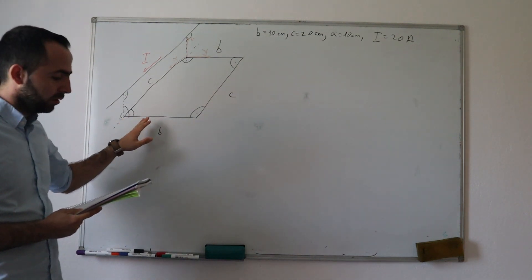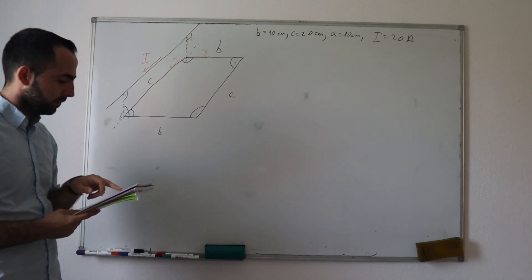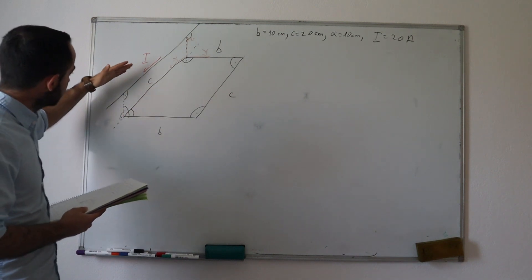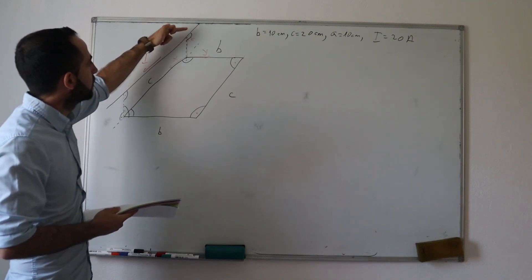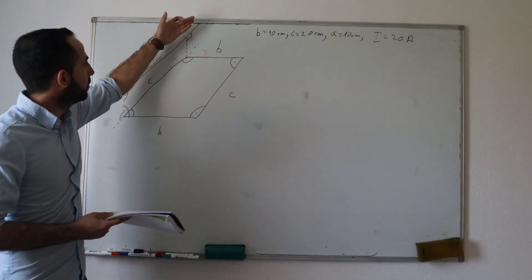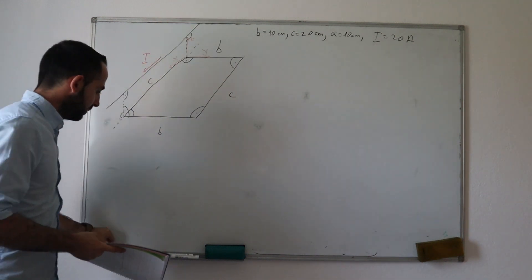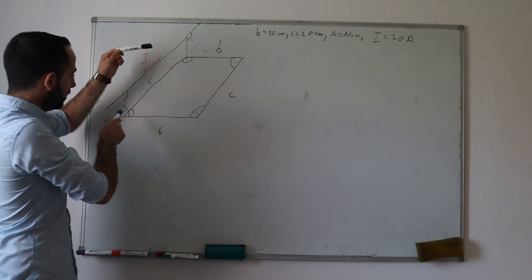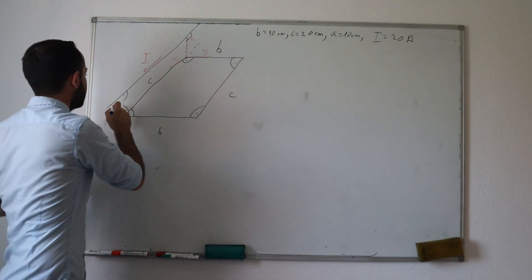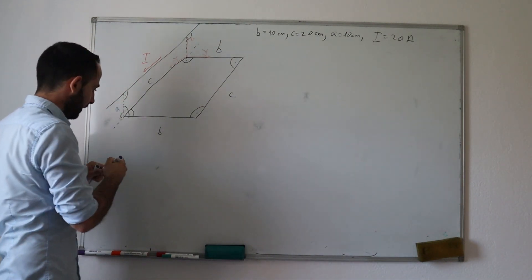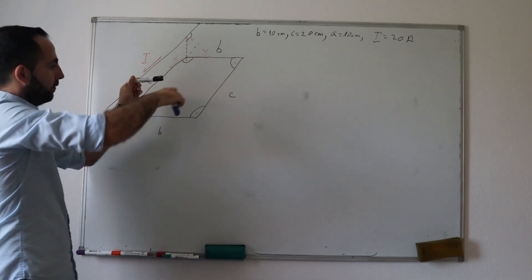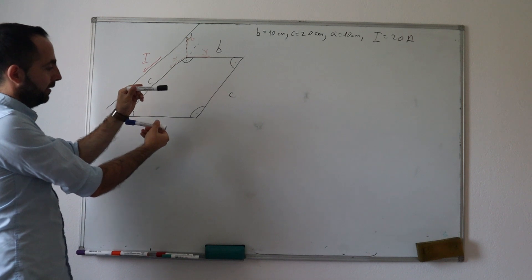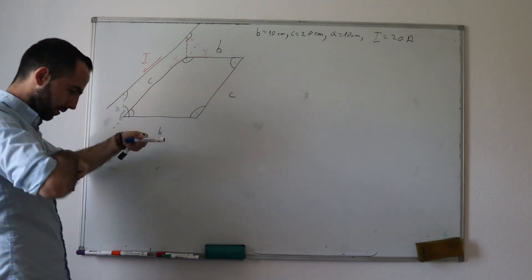This rectangular conductor is placed as shown on the figure. It is parallel to this infinitely long conductor. We can see we have an infinitely long conductor, and parallel to it at distance A, we have our contour. This side C is here, so it is like this.